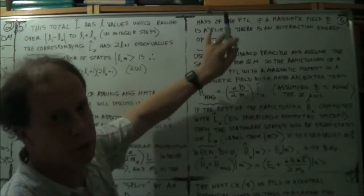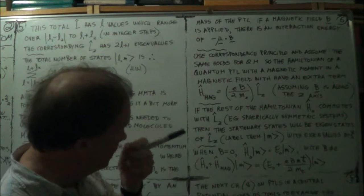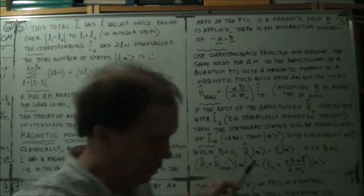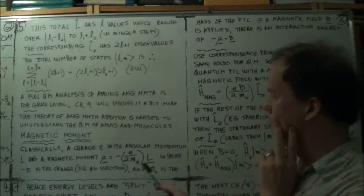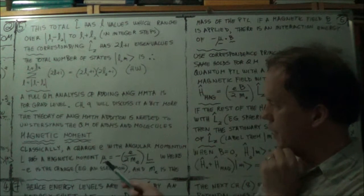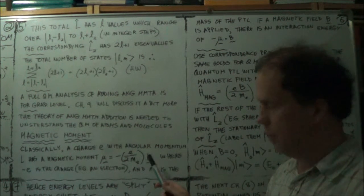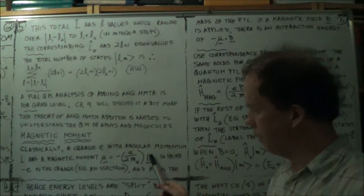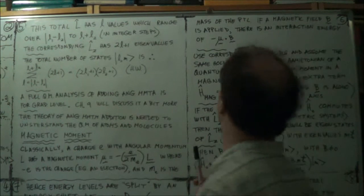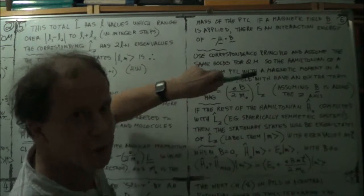Now, why are we talking about this? Because we'll now use the correspondence principle and assume that we can take this classical magnetic moment formula and find an equivalent in quantum mechanics. And then we'll make this L angular momentum as a vector here in classical mechanics. We'll make that into an operator and put a hat over it.